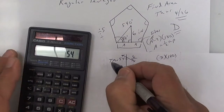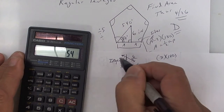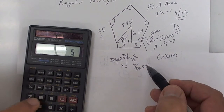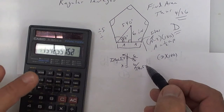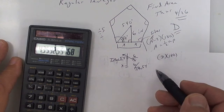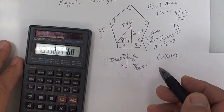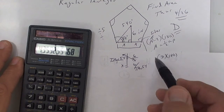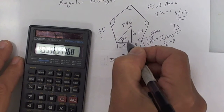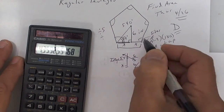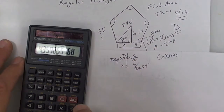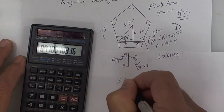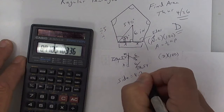You can cross multiply by putting a 1 if it helps. Six divided by tan 54, press equals, and I get 4.35. So this x, which is half of the side, is 4.35. We need to multiply by two to get the side, so times two. The side is approximately 8.7, but we have five of those, so times five equals — that's the true perimeter.